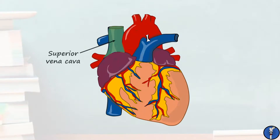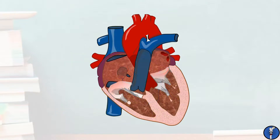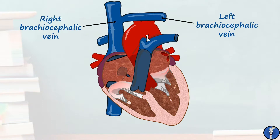Lastly, we have the superior and inferior vena cavae. Both of these take deoxygenated blood from the body back to the right atrium of the heart. More specifically, the superior vena cava takes blood from above the diaphragm, whilst the inferior vena cava collects it from below the diaphragm. The superior vena cava has no valves, unlike most veins in the body, as its draining is usually gravity assisted. It's approximately seven centimetres long in the adult and is formed by the joining of the right and left brachiocephalic veins at the level of the first intercostal space.